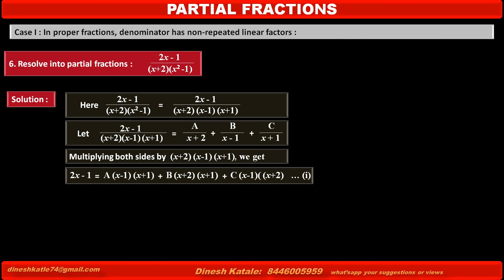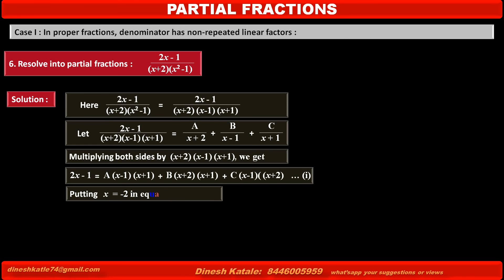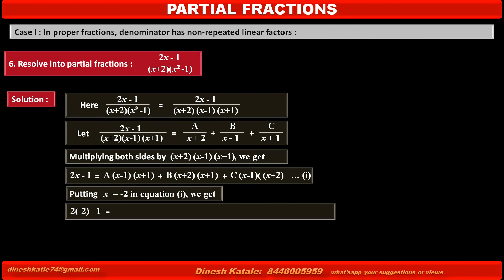Now we have to find the values of the three unknowns A, B, and C. To find the value of A, we eliminate terms containing B and C by putting x equal to minus 2 in equation 1. Replacing x by minus 2 on the left hand side we get 2 into (minus 2) minus 1.